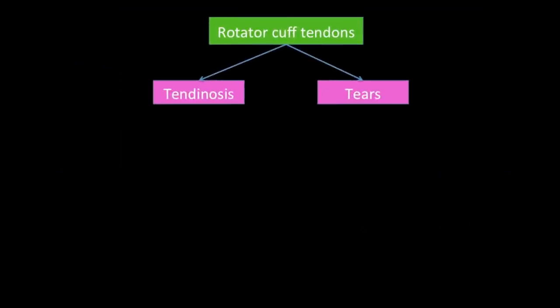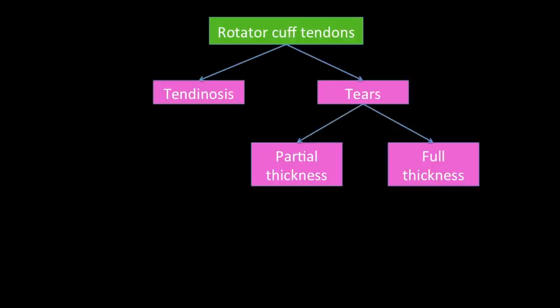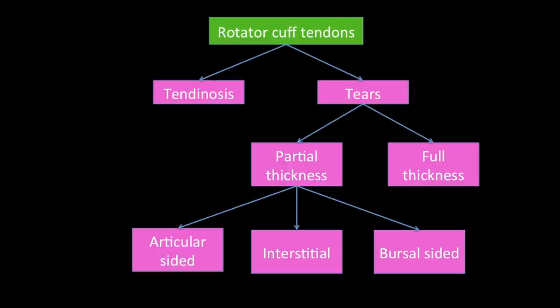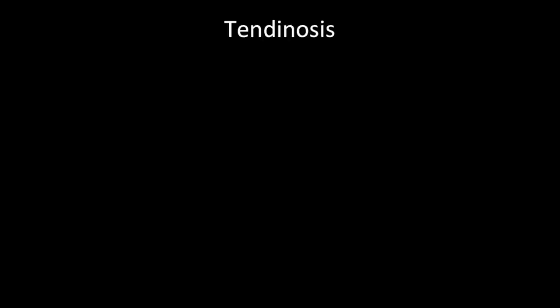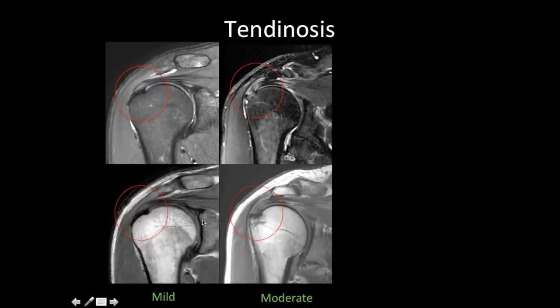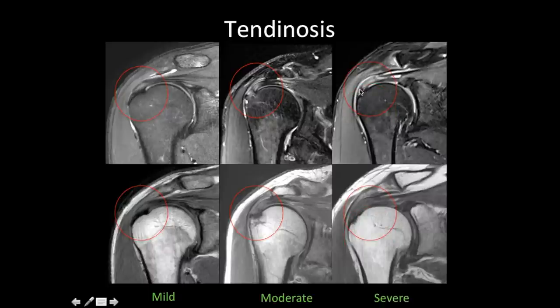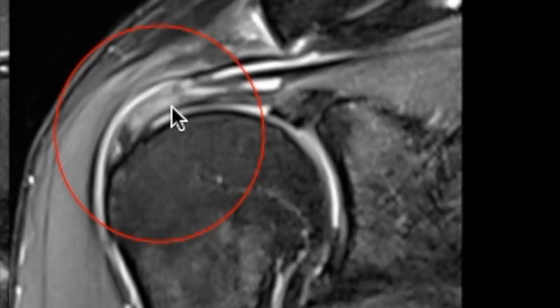When assessing rotator cuff tendons, first decide whether there is tendinosis or a tear. In case of tears, determine if it is partial or full thickness. Tendinosis should be graded as mild, moderate, or severe. Mild tendinosis shows some hyperintense signal within the tendon; moderate tendinosis involves increased length of tendon involvement with brighter signal; severe tendinosis has even brighter signal but still not as bright as the adjacent subacromial bursal fluid, confirming tendinosis rather than a tear.